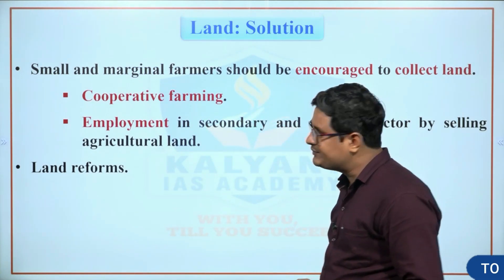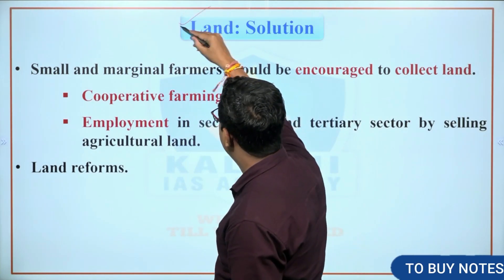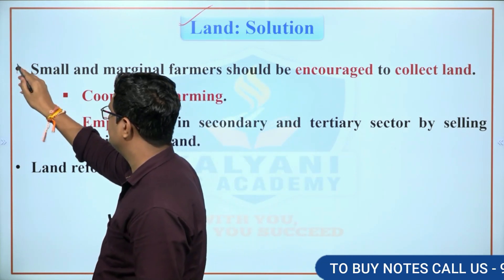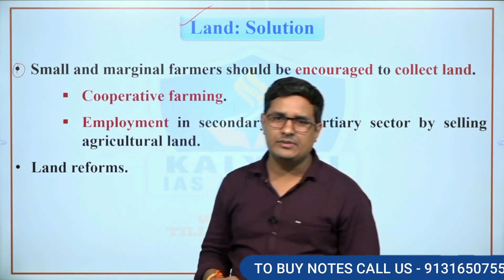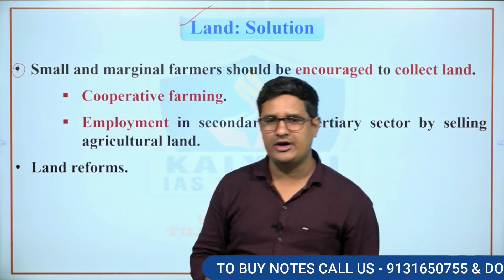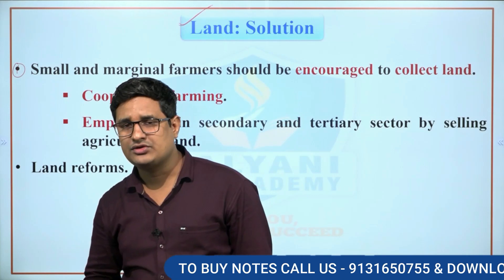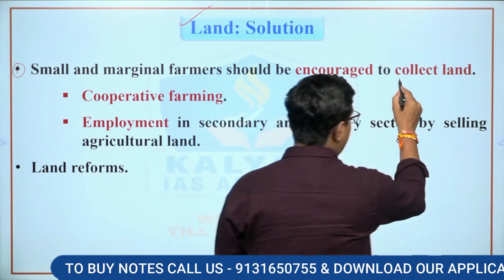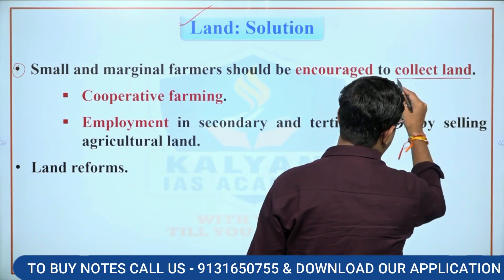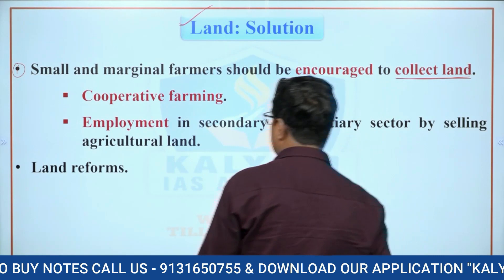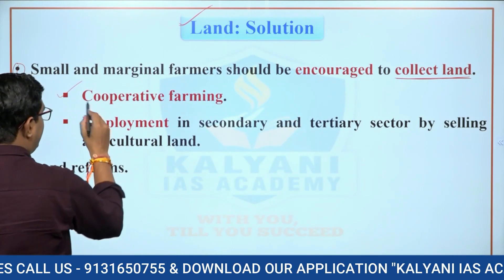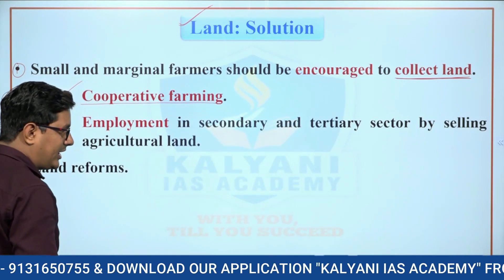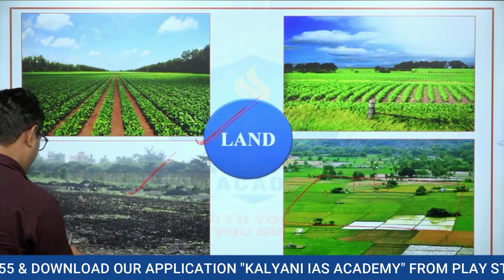How can these problems be overcome? The first solution is that small and marginal farmers should be encouraged to pool their land through cooperative farming. Under cooperative farming, farmers pool all their resources — manpower, education, agricultural equipment — together to increase agricultural production.